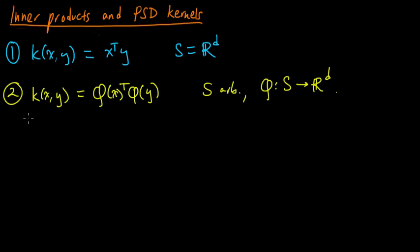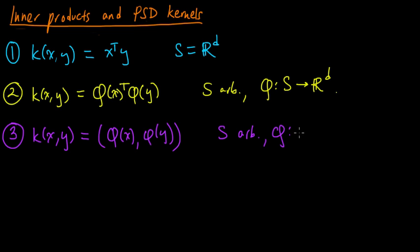And now we can generalize one more time here to the following kernel, the following covariance function. We can take the inner product of phi x with phi y, and here s is, again, some arbitrary set, arbitrary, and phi now is a function from s to a Hilbert space h. So h is a Hilbert space here, and this, so I'll say h is a Hilbert space named after David Hilbert.